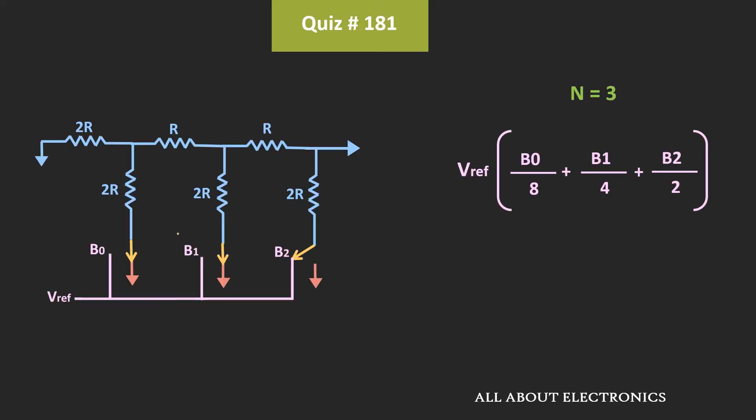Now, if you see the circuit of 3-bit R-2R ladder type DAC, then it will look like this. And here, these B0, B1, and B2 are the digital inputs. So based on the values of this input, this switch is connected to either a reference voltage or to the ground terminal.